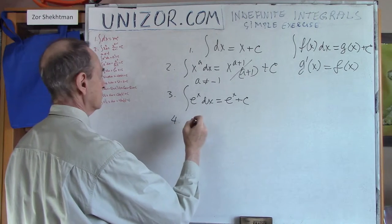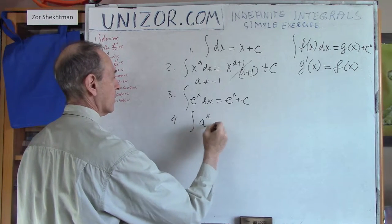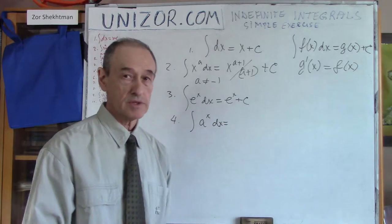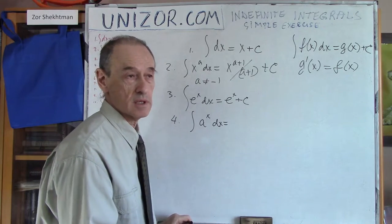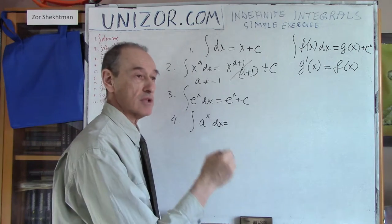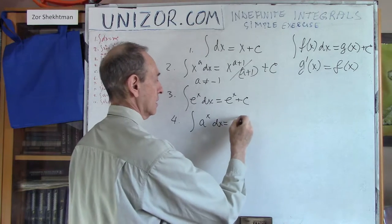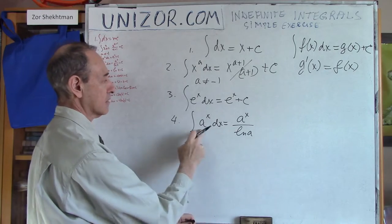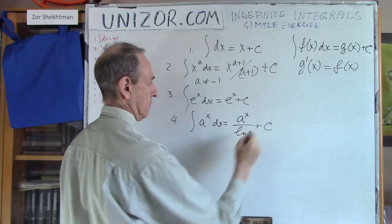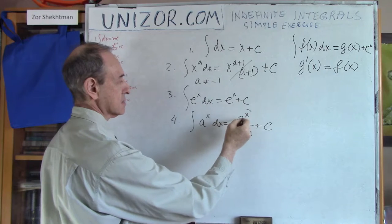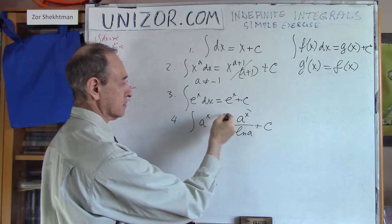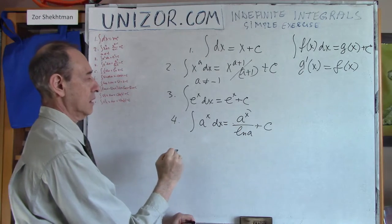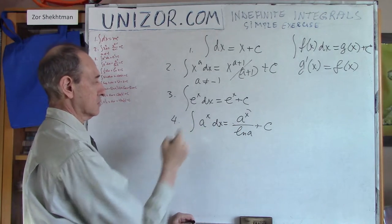There's another exponential function: integral of a to the power of x dx. Do you remember what the derivative of a^x is? That's a^x times the natural logarithm of a. So I have to neutralize the natural logarithm of a to get just a^x. The derivative of a^x divided by ln(a) is a^x times ln(a) divided by ln(a), so I divide by natural logarithm of a to get just a^x.